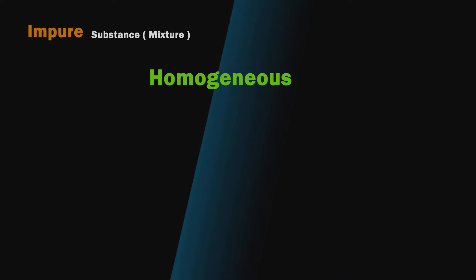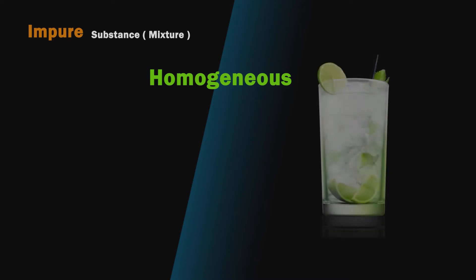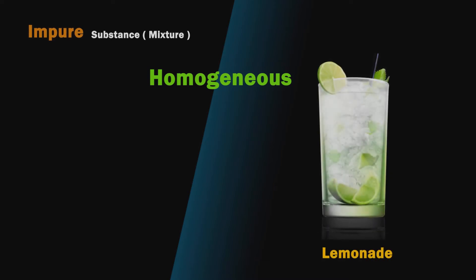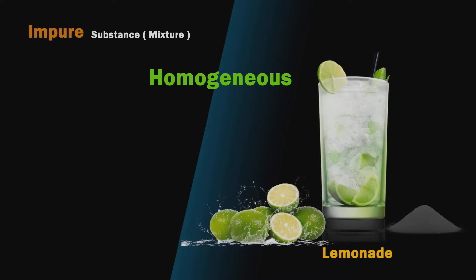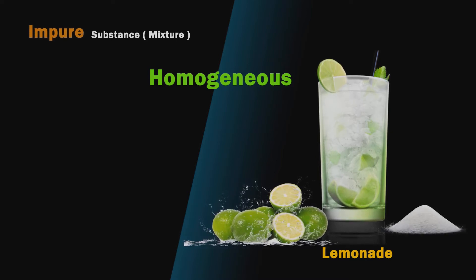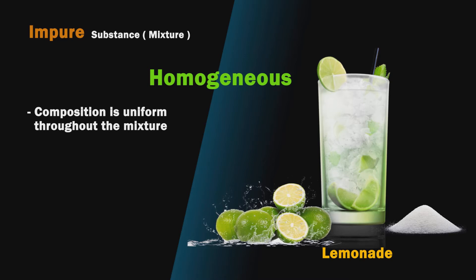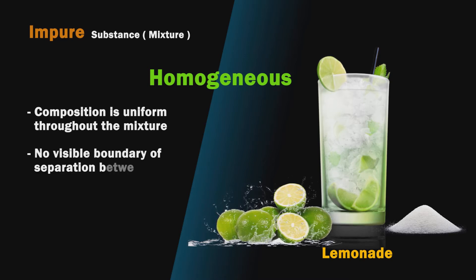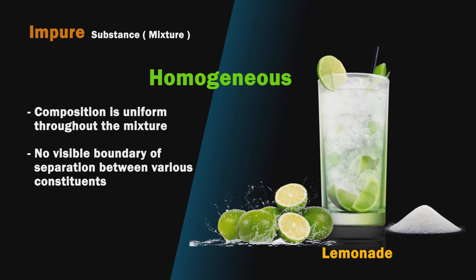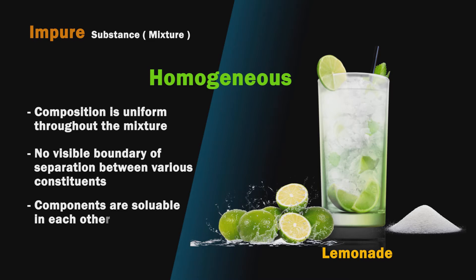Properties of a homogeneous mixture: First, composition is uniform throughout the mixture. Second, there is no visible boundary of separation between various constituents. Third, the components are soluble in each other.